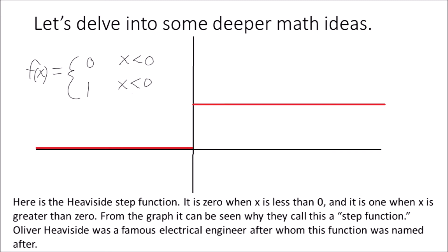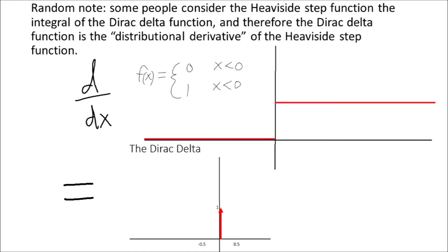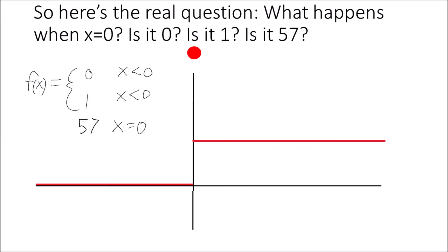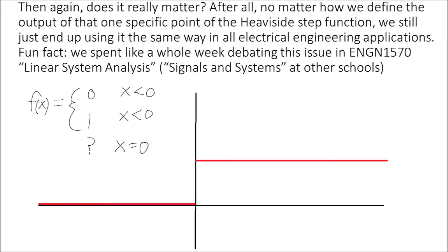Let's delve into some deeper math ideas. Here is the Heaviside step function — it is 0 when x is less than 0, and it is 1 when x is greater than 0. Oliver Heaviside was a famous electrical engineer after whom this function was named. Some people consider the Heaviside step function the integral of the Dirac delta function, and therefore the Dirac delta function is the distributional derivative of the Heaviside step function. The real question is: what happens when x equals 0? Is it 0? Is it 1? No matter how we define that one specific point, we still use it the same way in all electrical engineering applications.